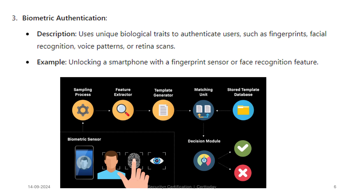A third method of authentication is biometric. Biometric uses unique biological traits to authenticate users, such as fingerprints, facial recognition, voice patterns, or retina scans. We use this, for example, when we unlock a smartphone with a fingerprint sensor or face recognition feature.